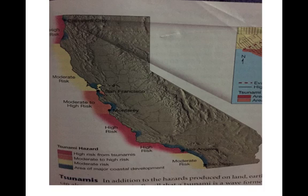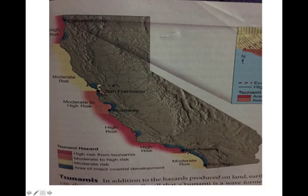In California, the northern part of the state is at very high risk, getting moderate around San Francisco, and remaining high risk as we go down the coastline. Right where my pointer is now — Long Beach — we are at the very edge of the high risk area for a tsunami. Again, these are very rare but it could happen.